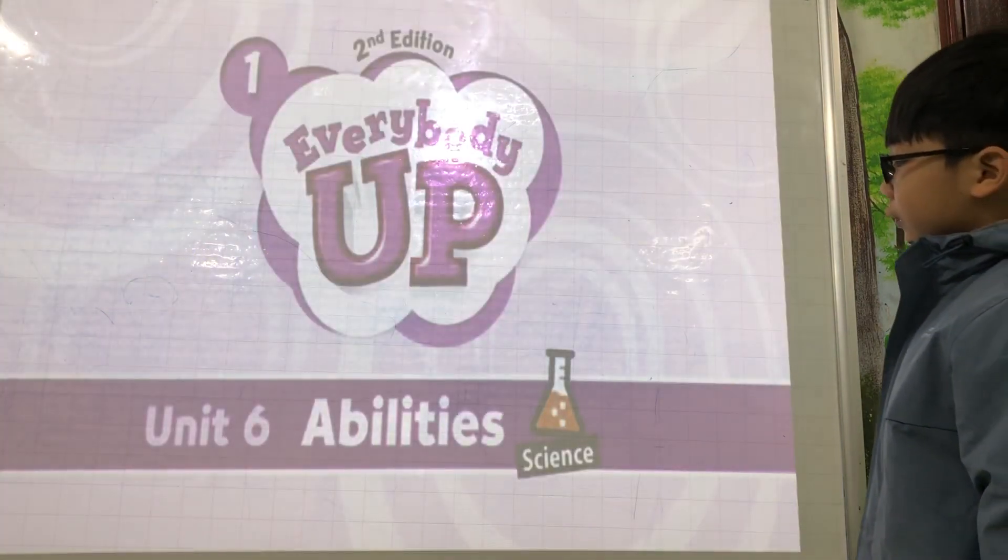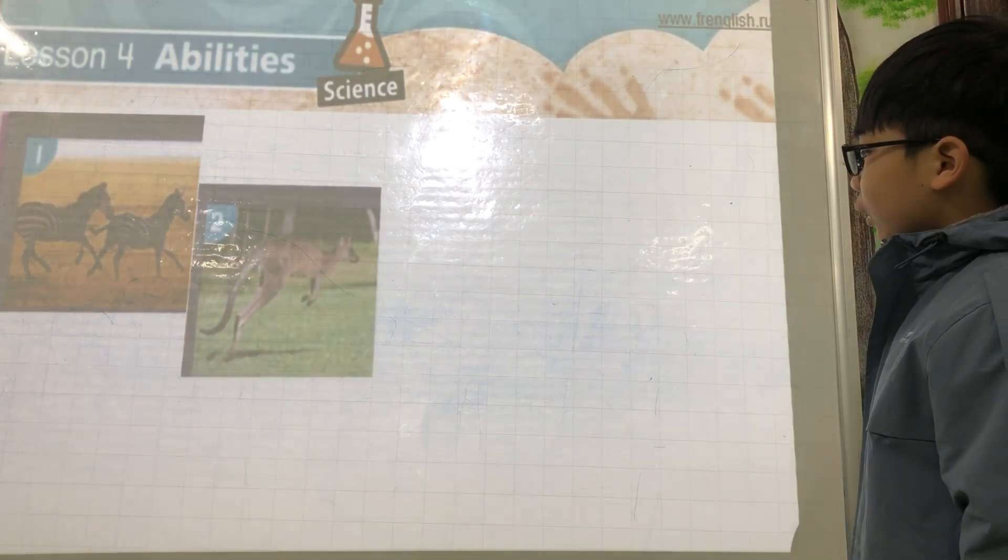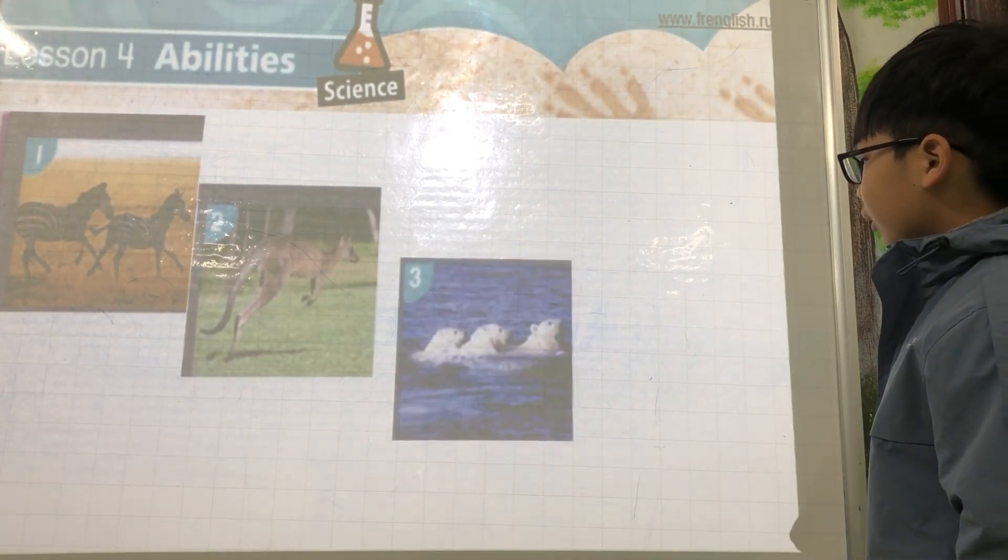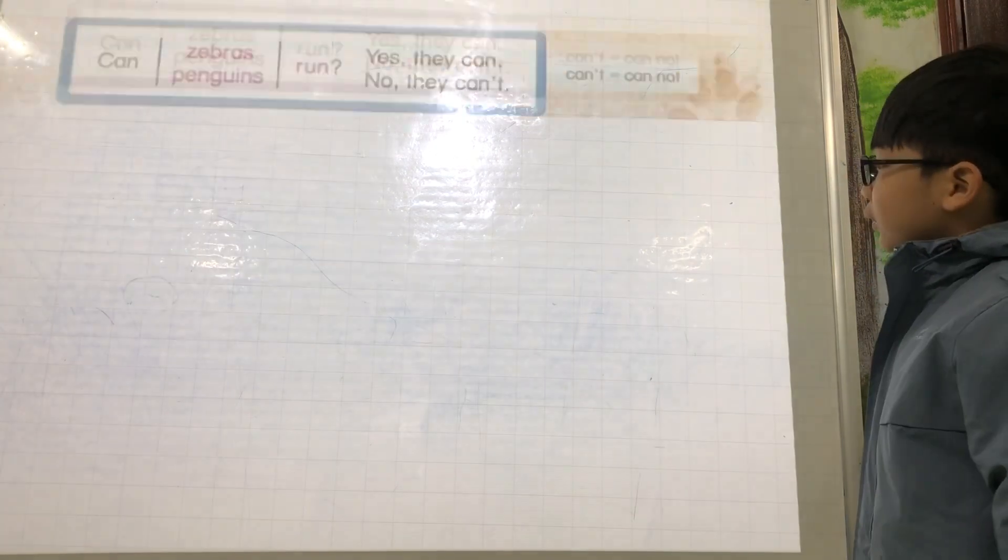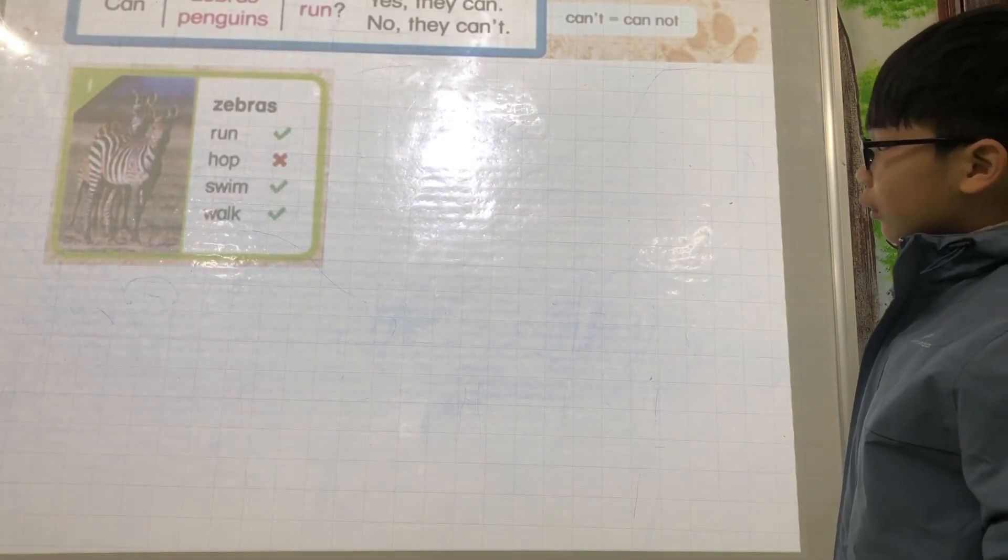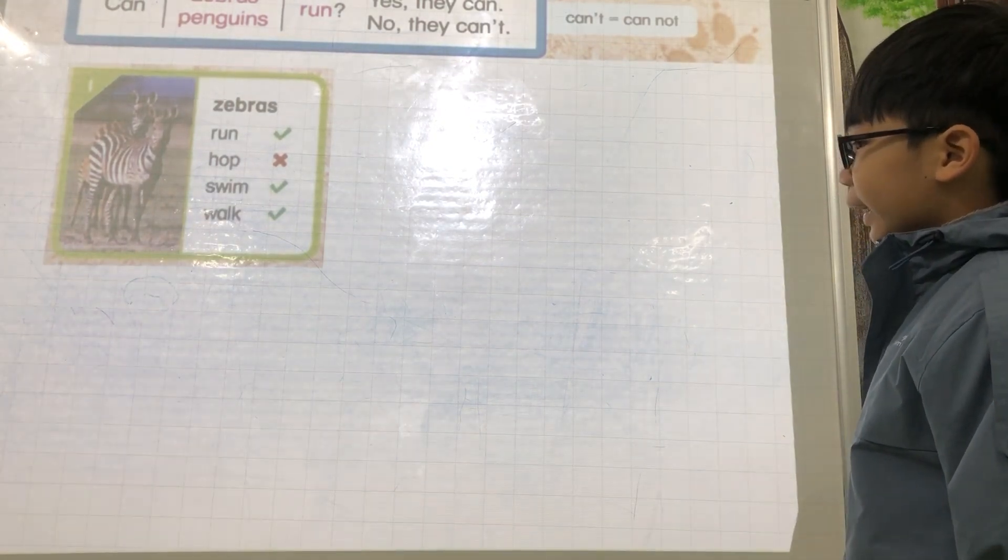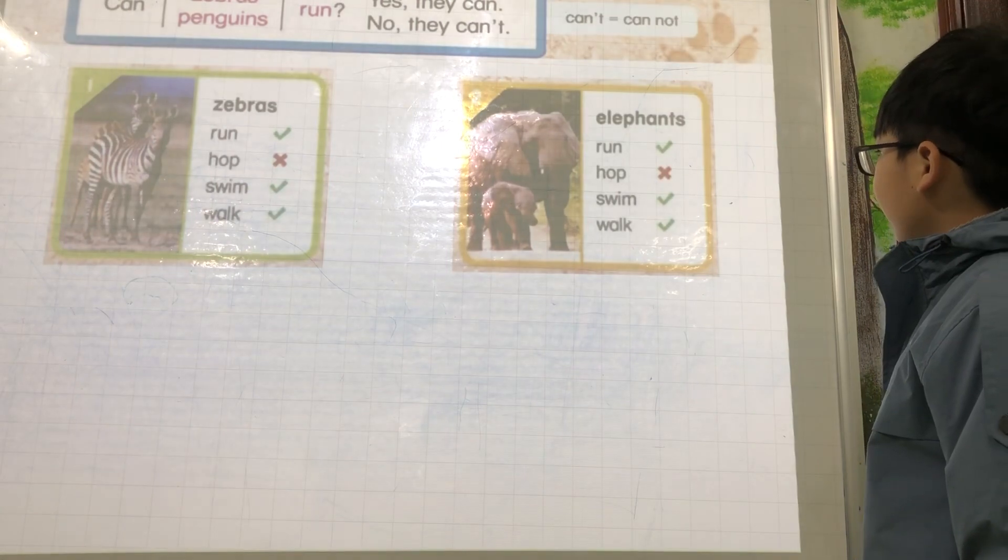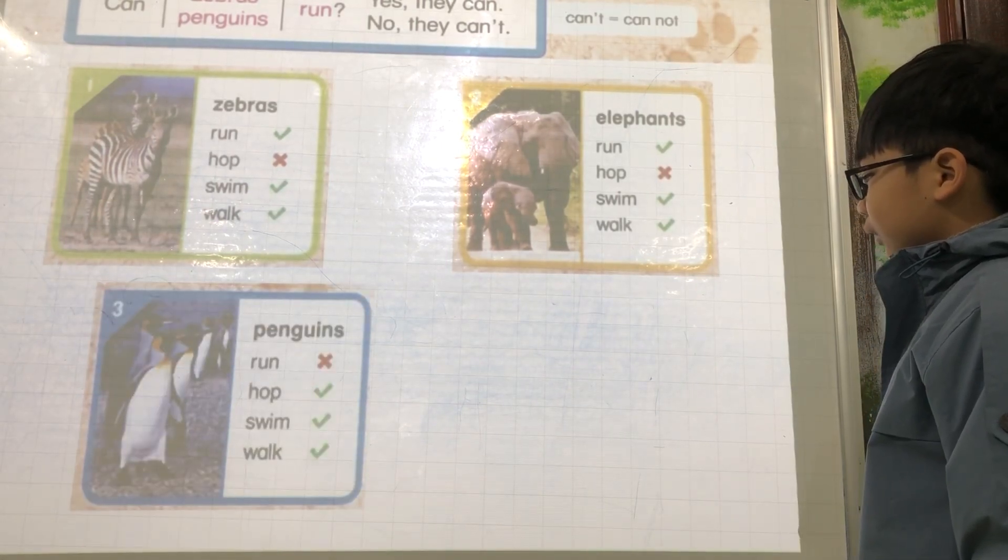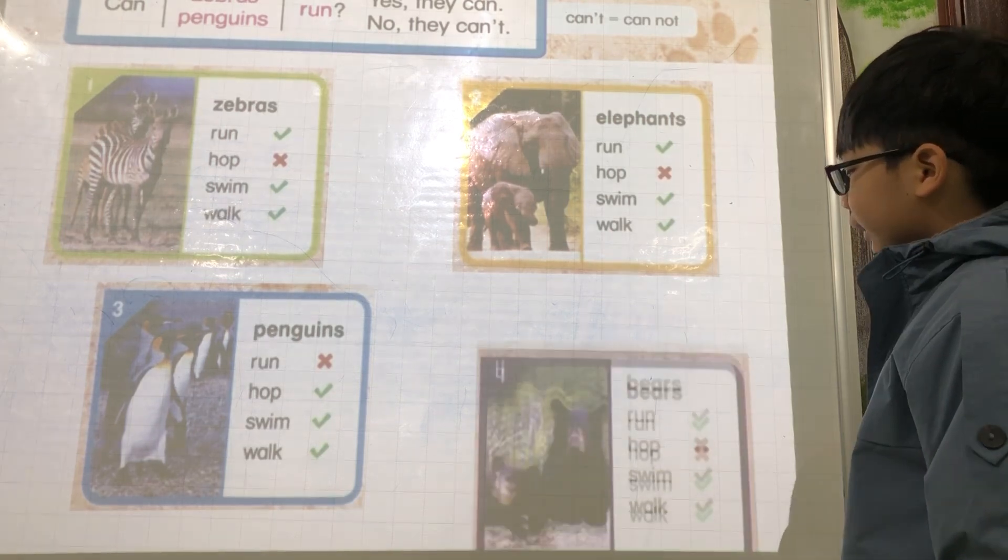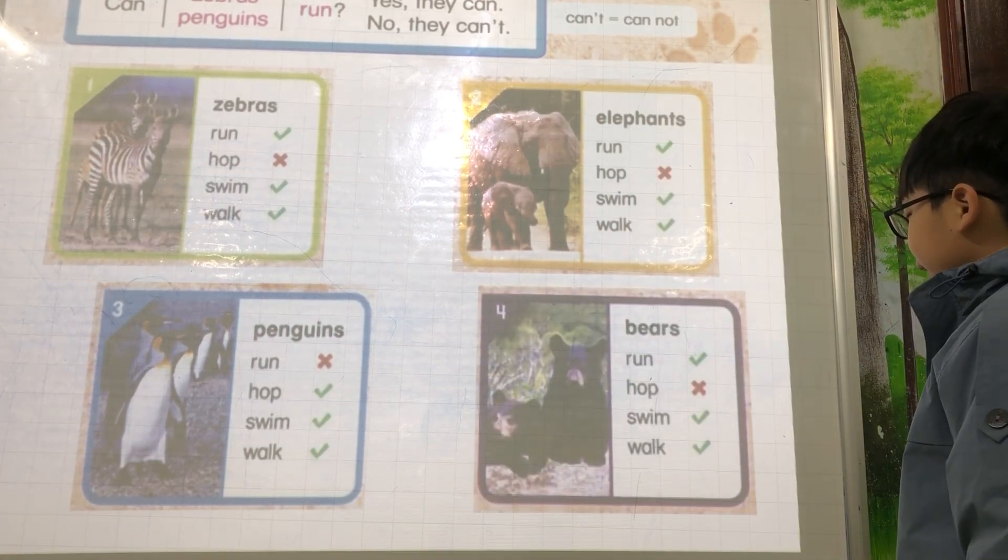Okay, let's talk about abilities. Run. Hop. Swim. Walk. Okay, good. Can zebras run? Yes, they can. Can elephants hop? No, they can't. Can zebras swim? Yes, they can. Can elephants run? Yes, they can.